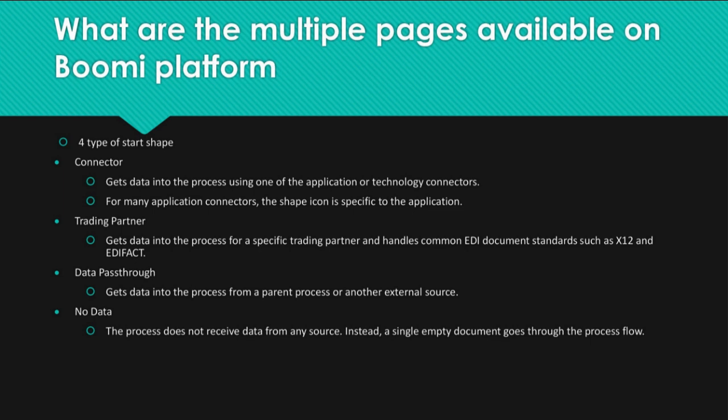Data pass-through: Gets data into the process from a parent process or another external source. No data: The process does not receive data from any source; instead, a single empty document goes through the process flow.